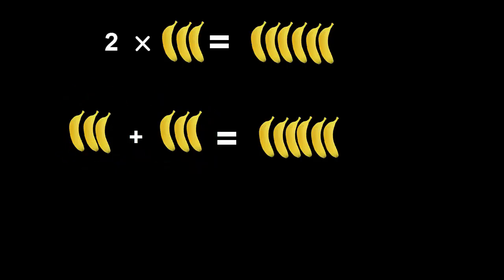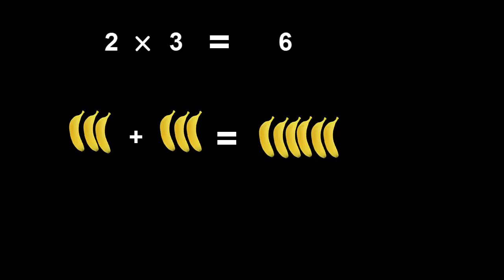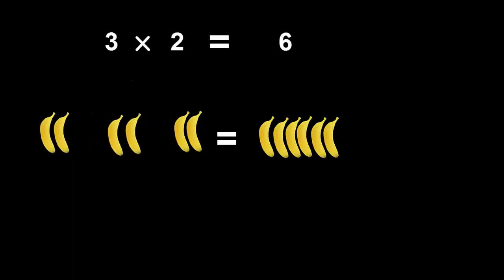When we put the numbers in, it looks like an equation again. Can we swap the numbers around like before? Yes. Two multiplied by three is the same as three multiplied by two.